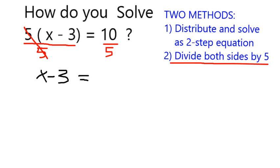So I now have that x minus 3 is equal to 2. And to solve this, it's fairly simple now. All I need to do is add 3 on both sides.